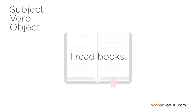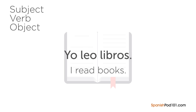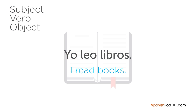Let's compare that same sentence 'I read books' in Spanish: 'Yo leo libros.' The subject is 'yo' meaning 'I,' then comes the verb 'leo' meaning 'read,' and finally the object 'libros' meaning 'books.' The word order for basic Spanish is also subject, verb, object — SVO. As you can see, the word order for sentences in Spanish is the same as that of English.